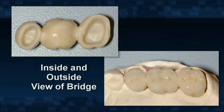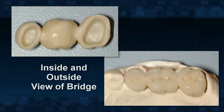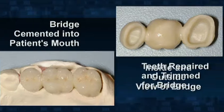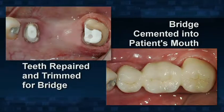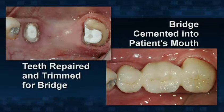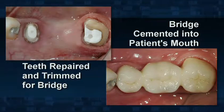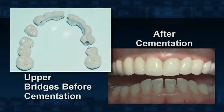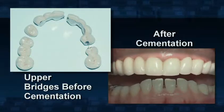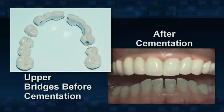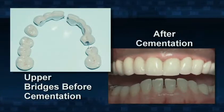A dental laboratory has made a ceramic bridge to be cemented into the patient's mouth. Fixed bridges may be ceramic, metal, plastic, or a combination of these materials. This example of a fixed bridge replacing one missing tooth shows the pleasant appearance of these restorations. A patient with multiple units of fixed bridges — they feel, chew, and look just like natural teeth, but they cost significantly more than removable partial dentures.